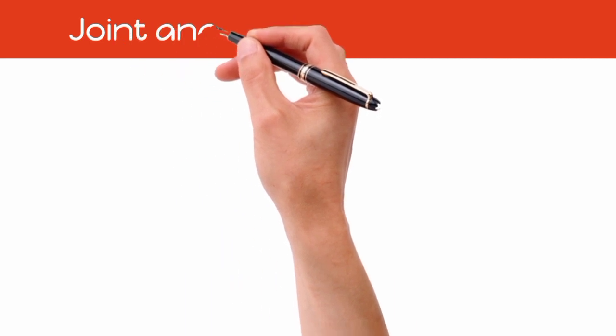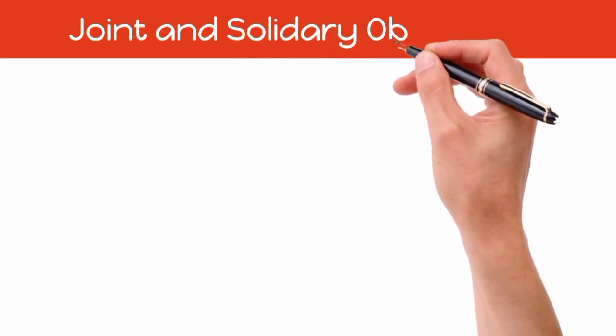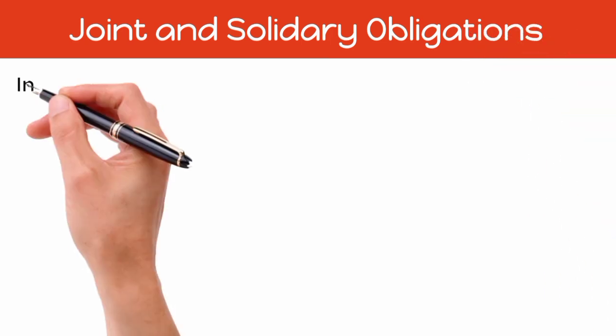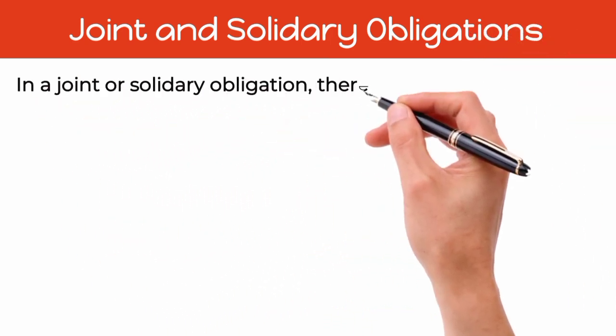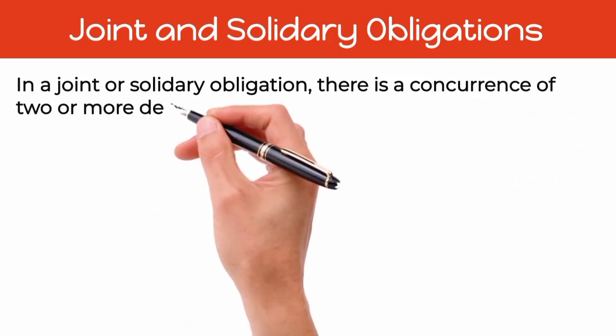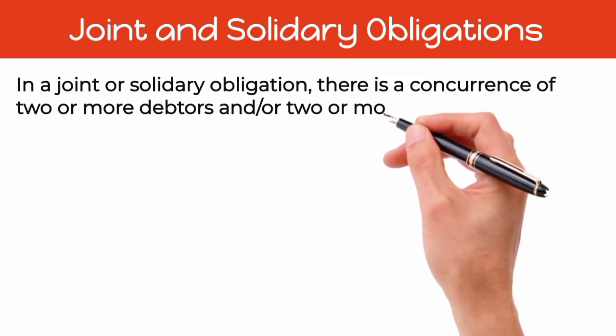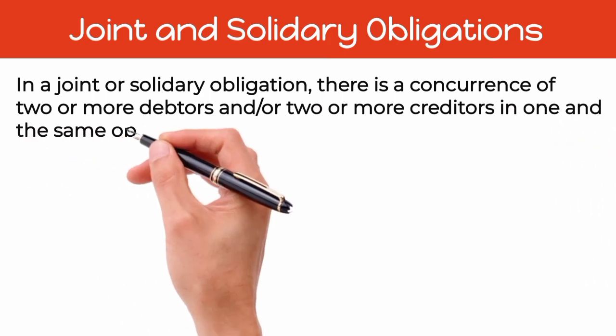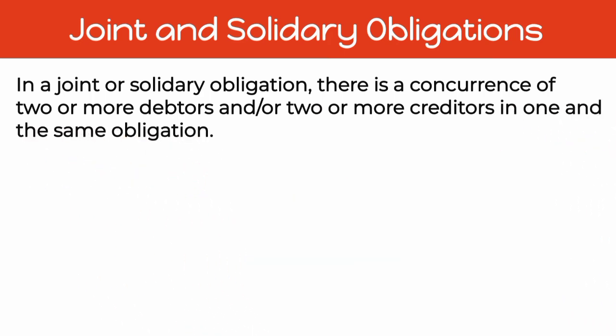First, let's discuss the concept of Joint and Solidary Obligations. In a Joint or Solidary Obligation, there is a concurrence of two or more debtors and/or two or more creditors in one and the same obligation. Meaning to say, kapag dalawa o higit pa sa dalawa yung debtor, and at the same time, dalawa o higit pa sa dalawa yung creditor, automatic it is either a Joint Obligation or a Solidary Obligation.